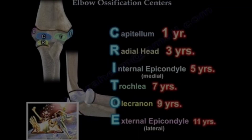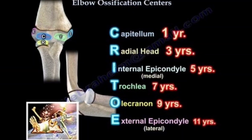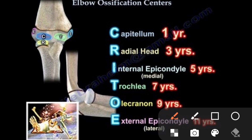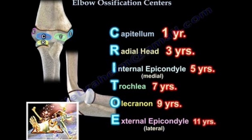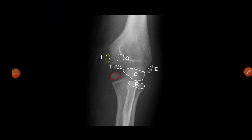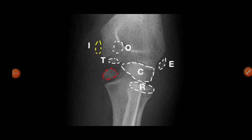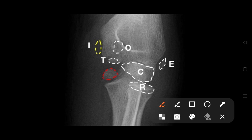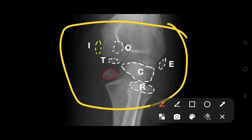There is another mnemonic called CRITOE, which is very famous. C for capitulum, R for radial head, I for internal epicondyle (medial epicondyle), T for trochlea, O for olecranon, E for external (lateral) epicondyle. The ages of these ossification centers are 1, 3, 5, 7, 9, 11 — the odd numbers.